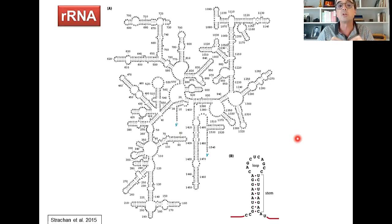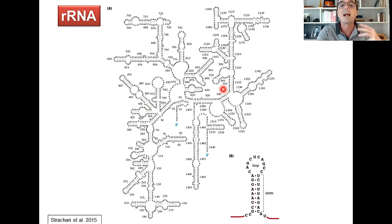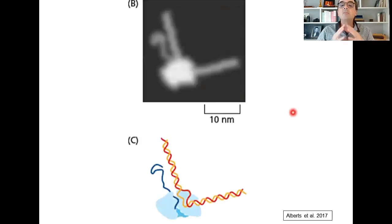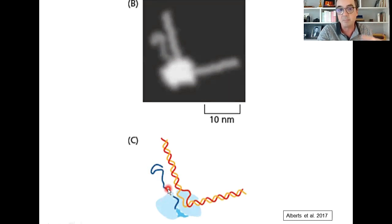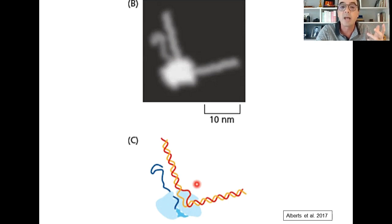Já o RNA ribossomal ou ribossômico pode ser bastante longo, também dobra-se sobre si mesmo formando estruturas bastante complexas que vão ter um papel catalítico durante a síntese proteica. Vamos agora conversar sobre como esse RNA nasce, como ele é sintetizado. Aqui temos uma belíssima fotografia de microscopia eletrônica mostrando uma estrutura simplificada nessa ilustração, onde vemos uma dupla hélice de DNA servindo de molde para a síntese de uma fita simples de RNA. Lembremos: todos os tipos de RNA são sintetizados a partir de um molde de DNA — um processo que chamamos de transcrição.